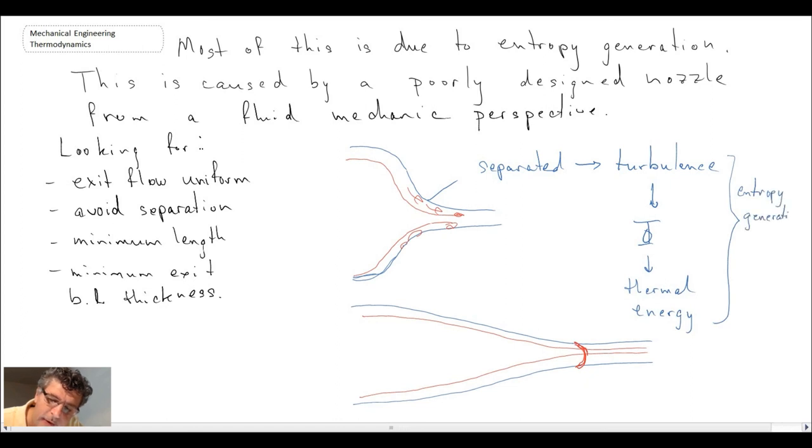So this here would be the process of entropy generation. Now there could be other ones that are at play as well, but this would probably be one of the larger and more significant ones. So that gives you some background in terms of why this nozzle may be behaving the way it is that we see where there's actually exergy destruction taking place.